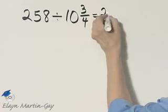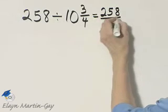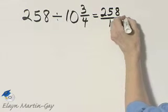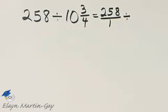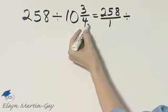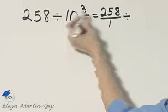You can think of this as 258 over 1, and it's going to be divided by—let's write this mixed number as an improper fraction. 4 times 10 is 40 plus 3...